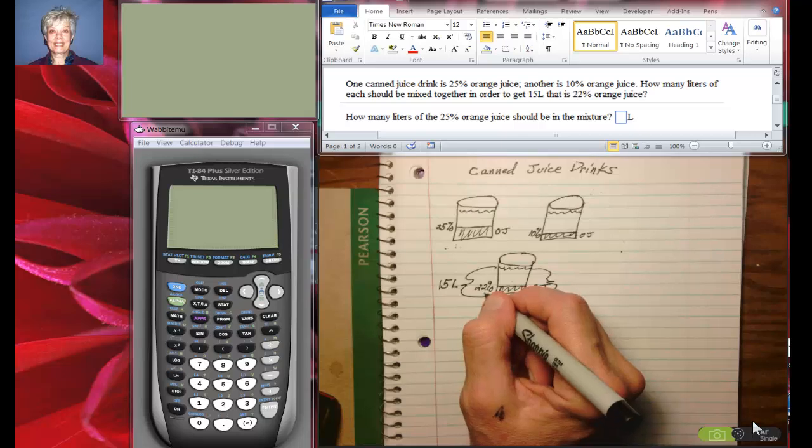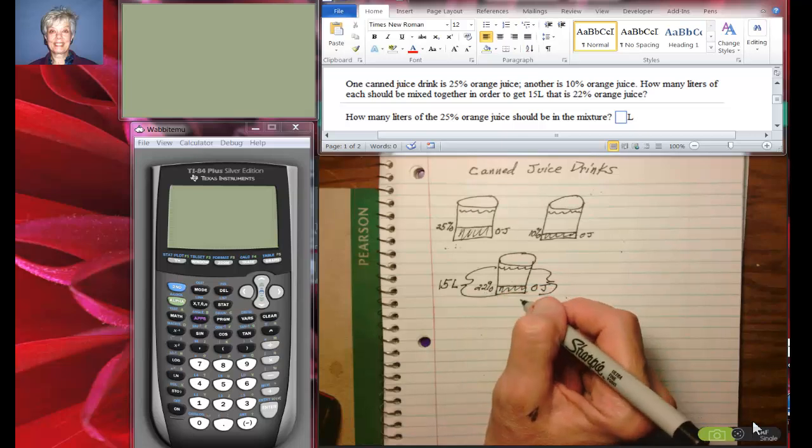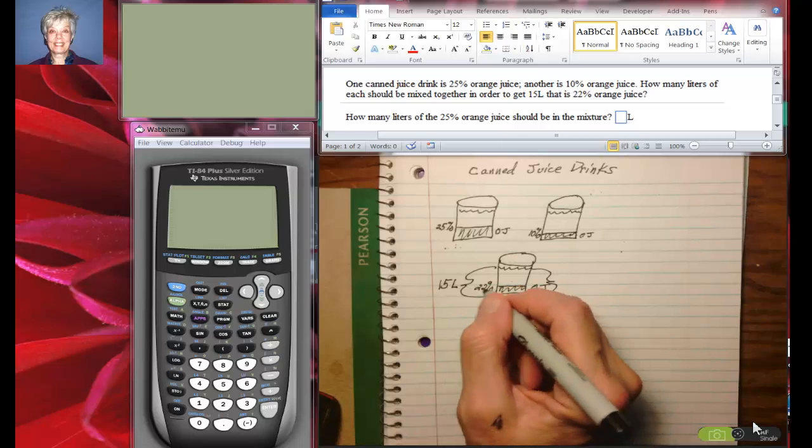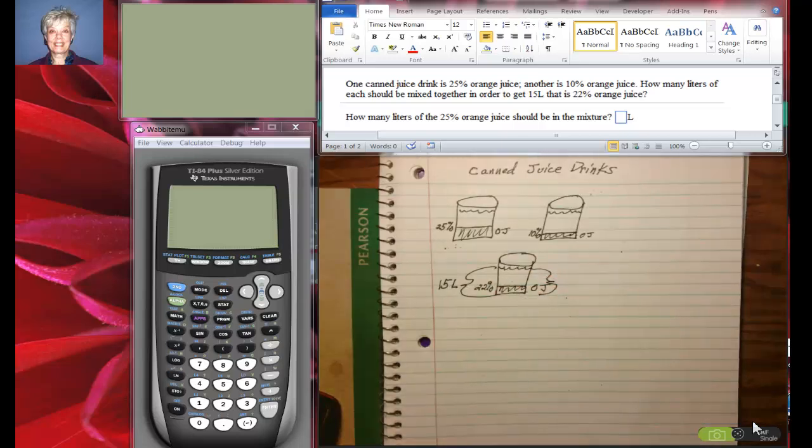And so we have to find out, I mean we can find out how much orange juice there is right away because 22% of this 15 liters is going to be the pure orange juice. So let's find out.